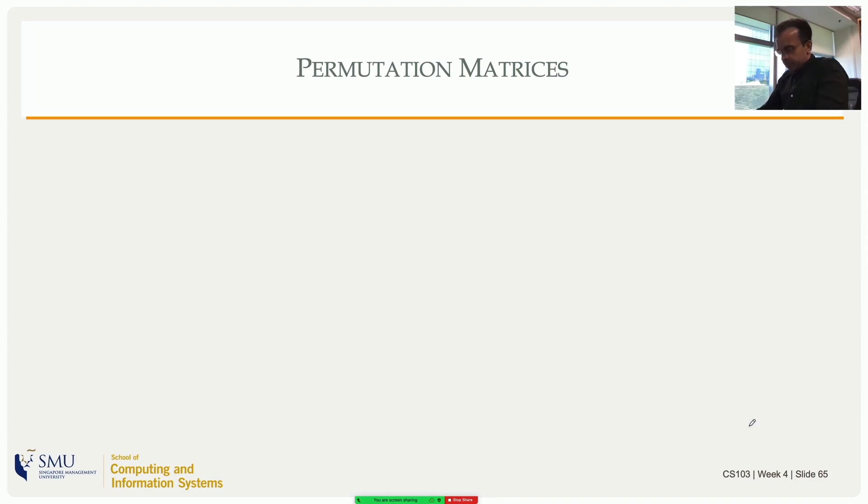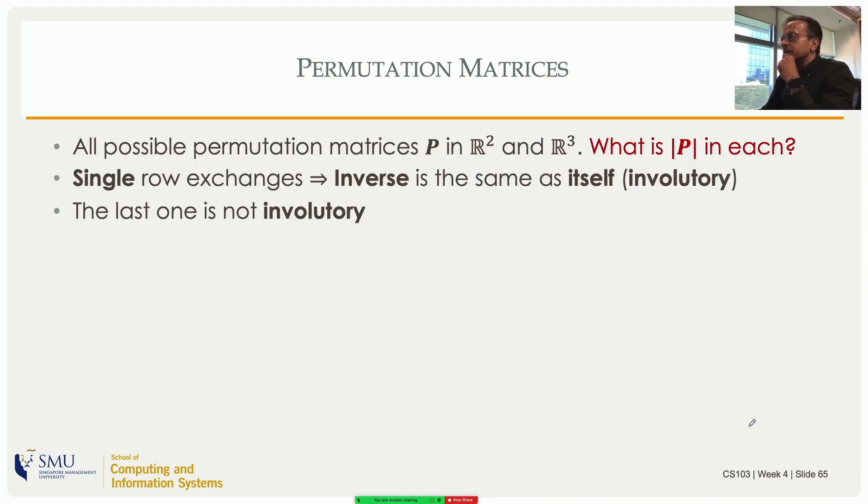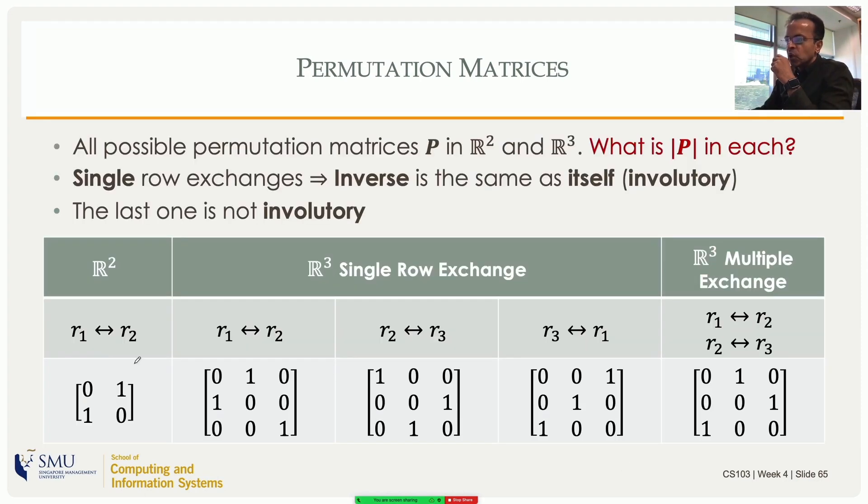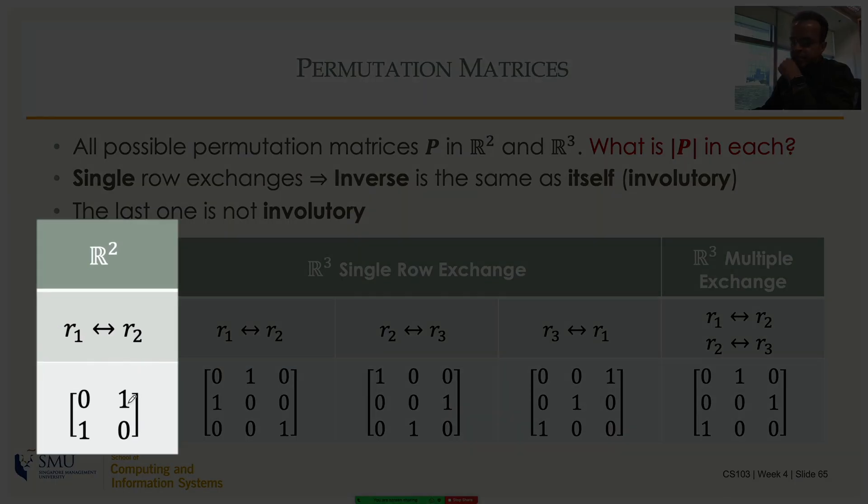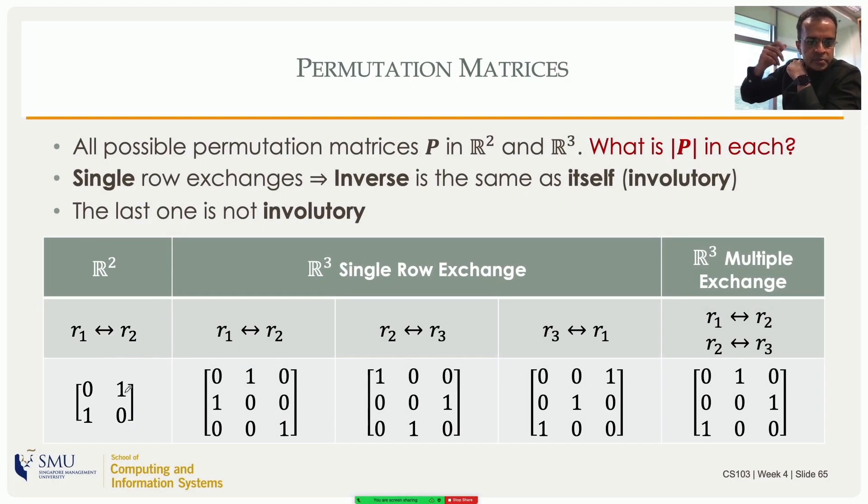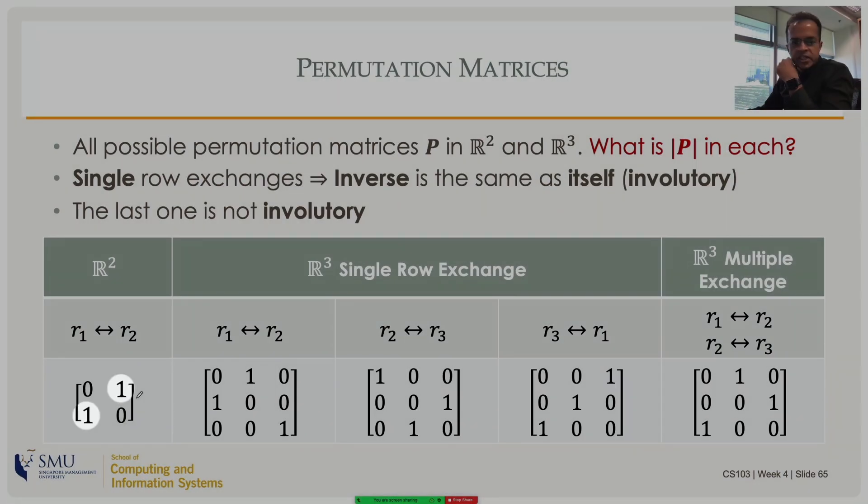Now let me talk a little bit more about the permutation matrices. If you have in R2, if you want to swap the first row and second row, this is the permutation matrix. I took the identity matrix and swapped the first row and second row. Its determinant, as you can see, is 0 minus 1, it's minus 1.